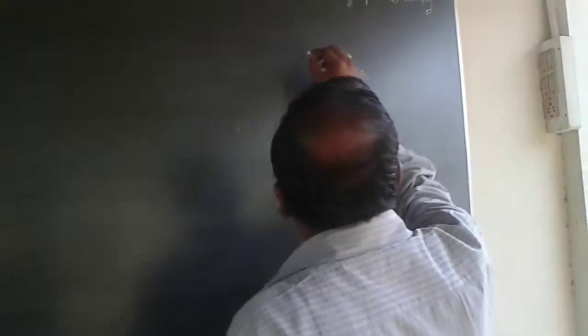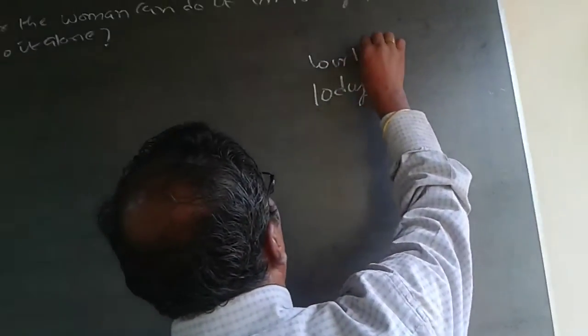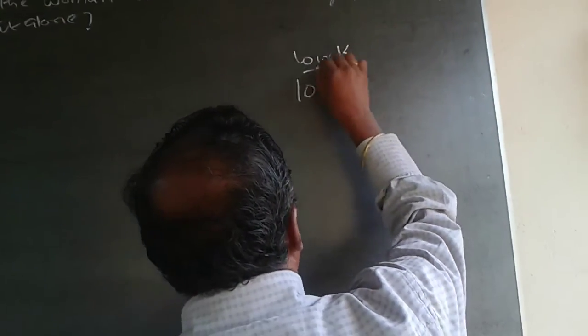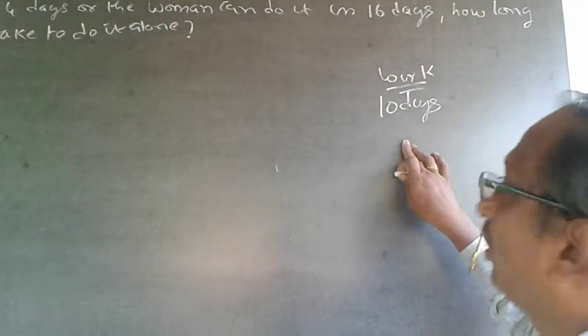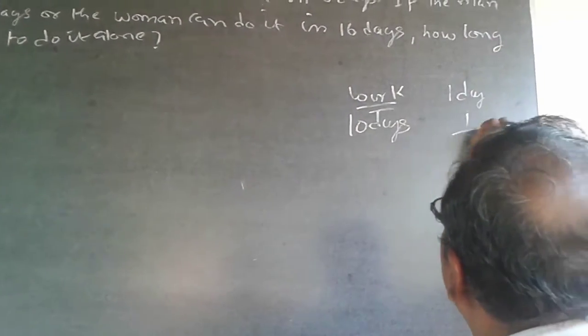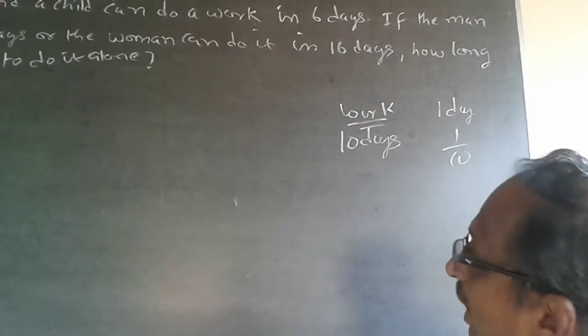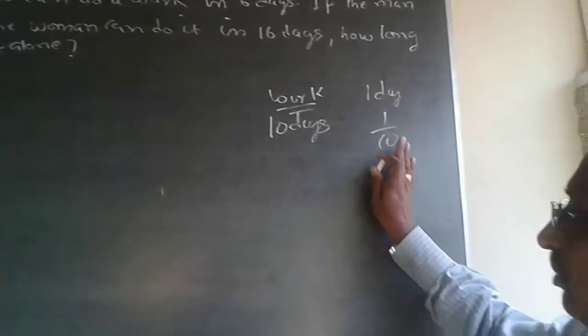For example, suppose I can do a work in 10 days — I can complete a work in 10 days. Find out what I will do in one day. One day's work will be 1 by 10, as simple as this.